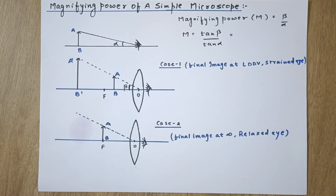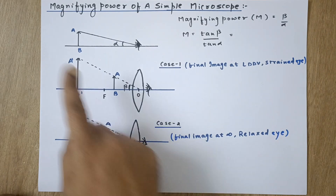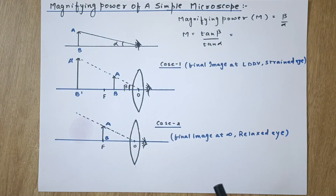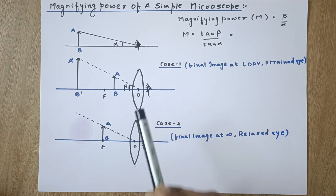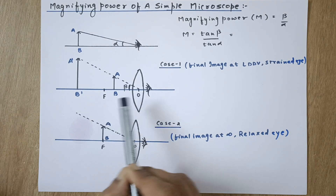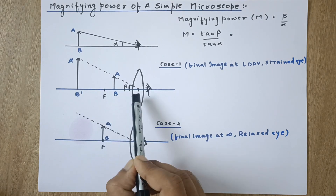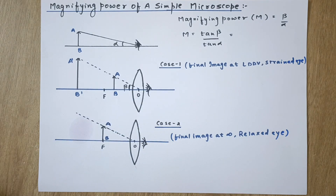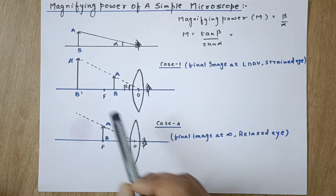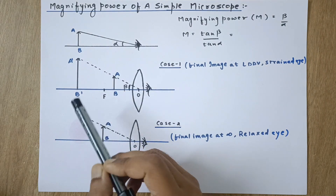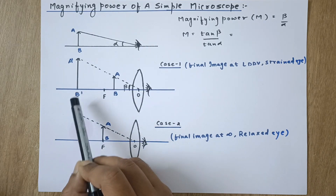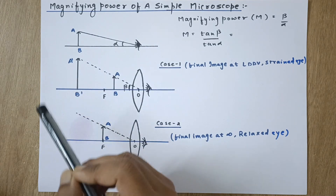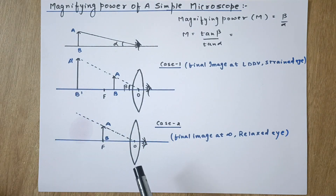In this video we are going to discuss the magnifying power of a simple microscope. A simple microscope is a single convex lens. When an object is kept between the focus and the optical center of the convex lens, the image formed is behind the object — it is virtual in nature and it is enlarged.